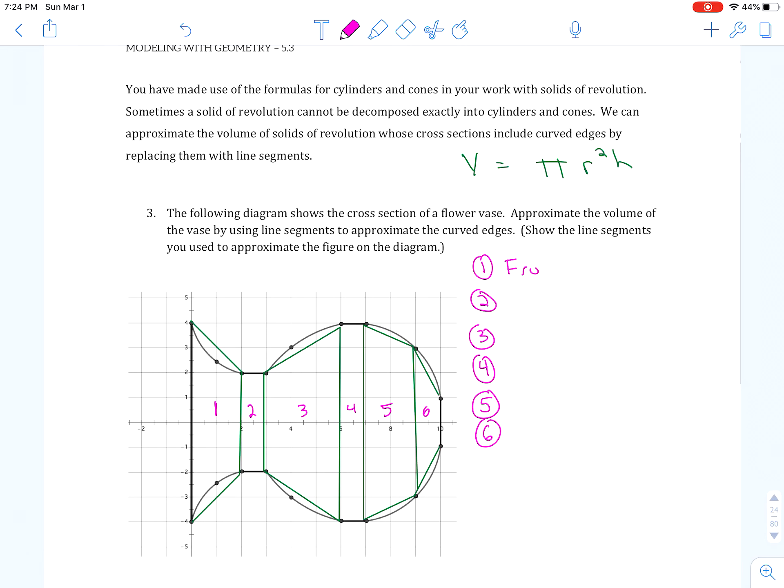Well, the first shape is a frustrum. Shape two is a cylinder. Three is a frustrum. Four is a cylinder. And, five and six are both frustrums. Okay.